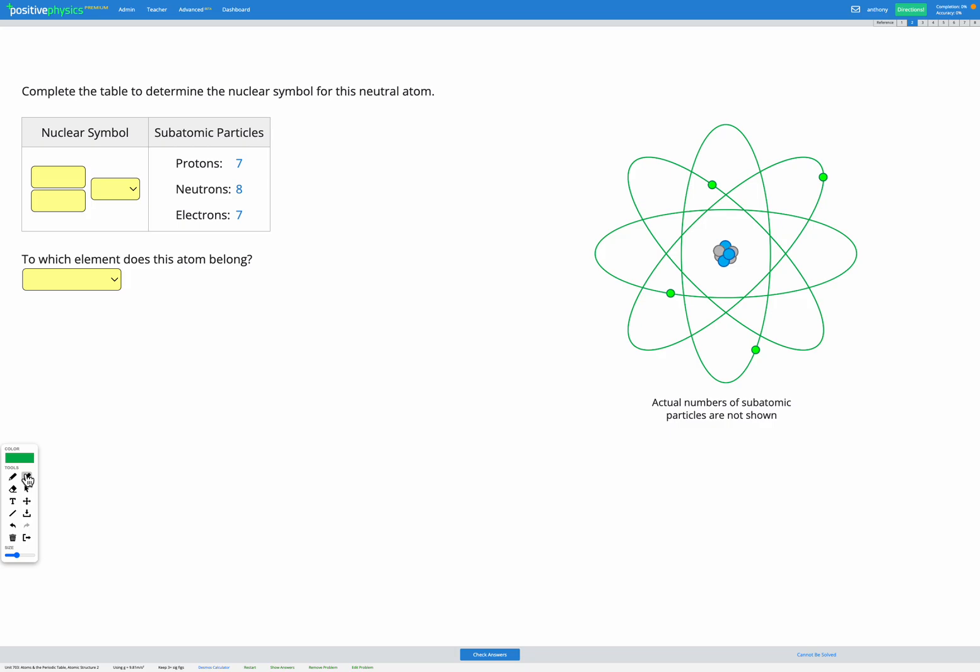Let's start with the number of protons. We're told that there are seven protons in this atom. So the atomic number, that's always equal to the number of protons. So since we have seven protons, we know the atomic number is going to be seven, and that's the one on the bottom of our symbol. So we can fill that in in our answer box here.